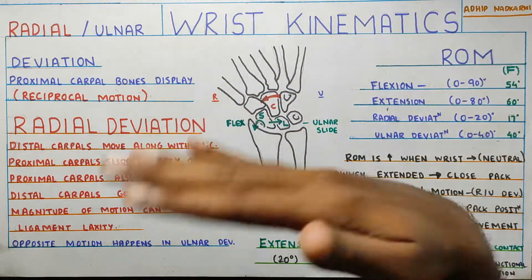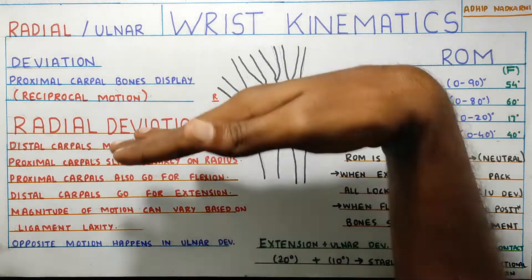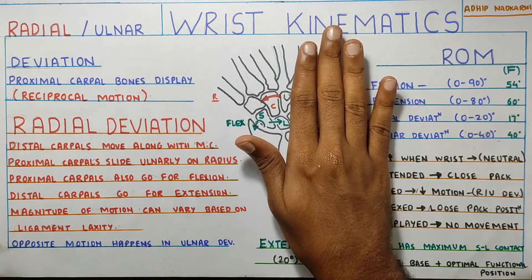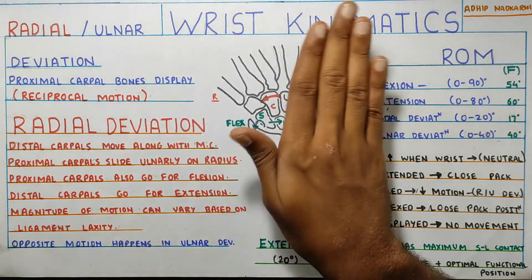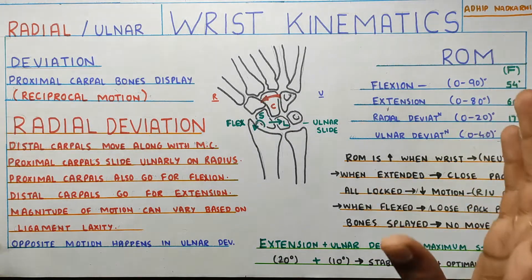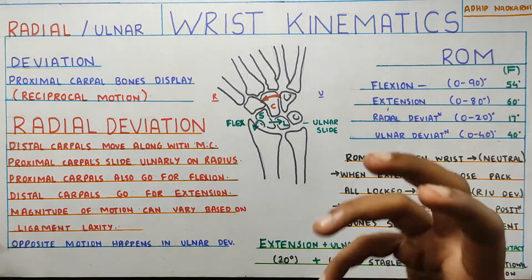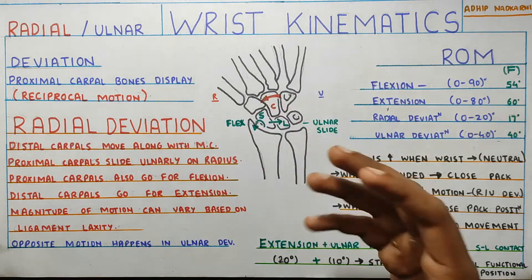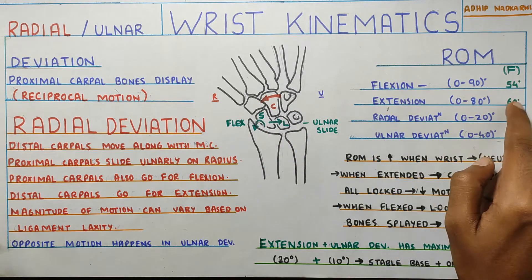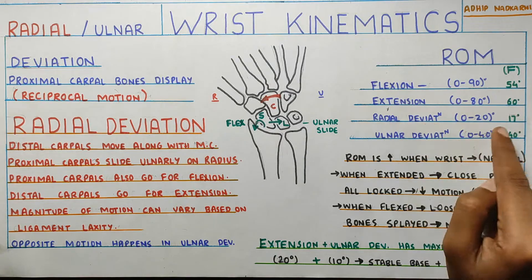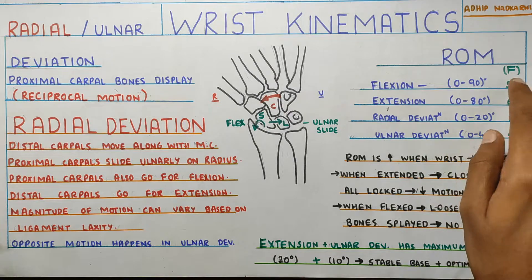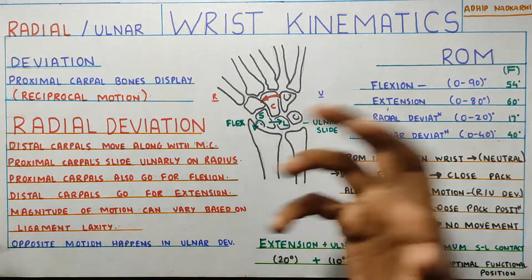Flexion of the wrist joint is around 90 degrees, extension is around 80 degrees, radial deviation is around 20 degrees, and ulnar deviation is around 40 degrees. Those are the normal ranges of motion. Functionally, what we actually use in day-to-day life is flexion of 54 degrees, extension of 60 degrees, radial deviation of 17 degrees, and ulnar deviation of 40 degrees.